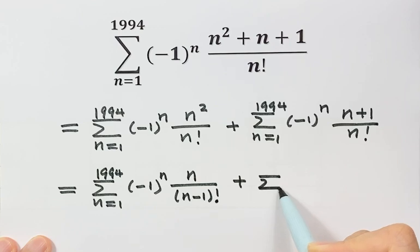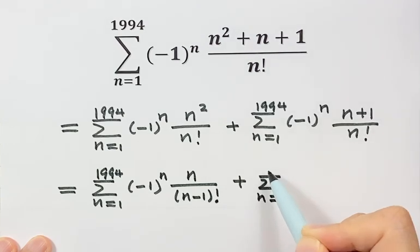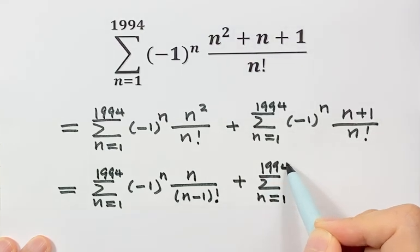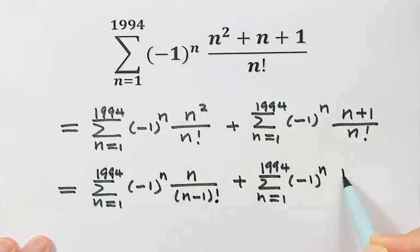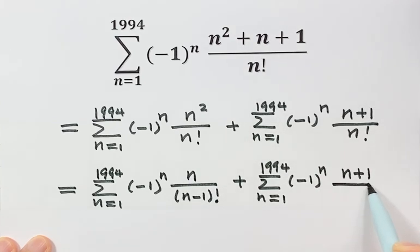Then let's write down the second part. Here we have n plus 1 on top and n factorial on the bottom.